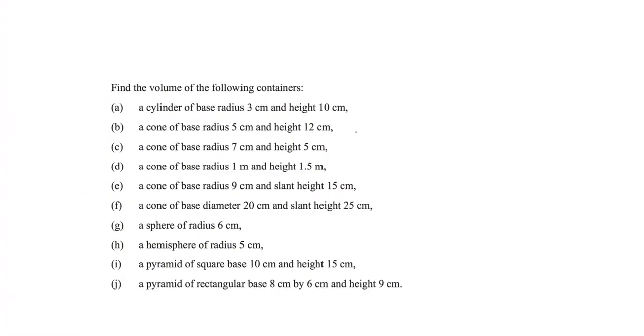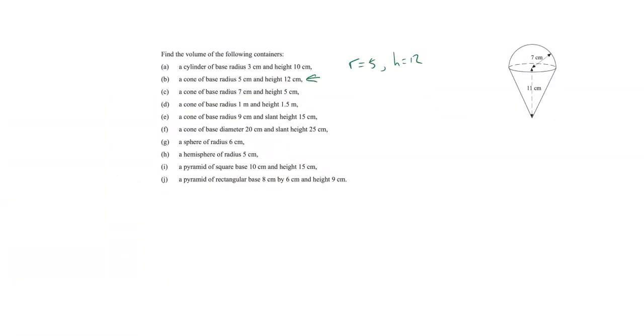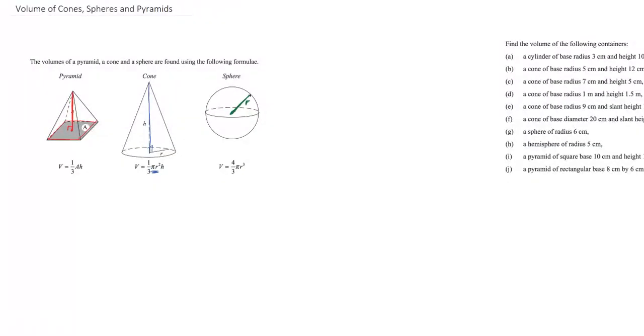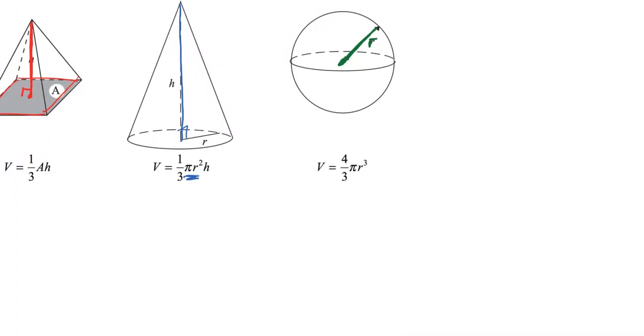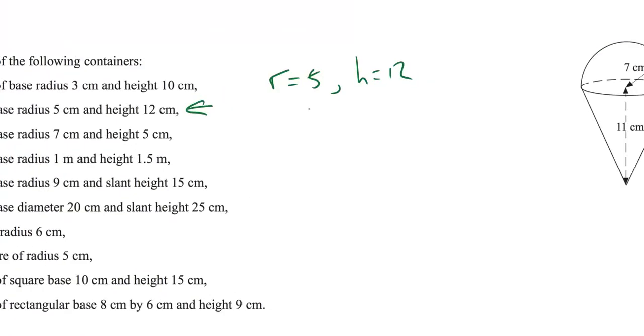So let's jump in and look here at B. We're going to find the volume of a cone. So we have r equals 5 and we have that height equals 12. So we don't need to remember the formula. A cone, remember, is a third pi r squared h. So a third times pi times r squared times h.